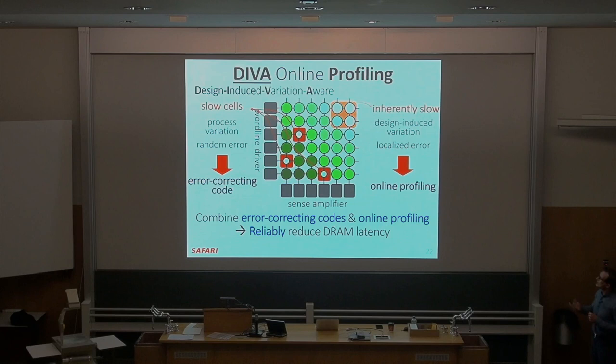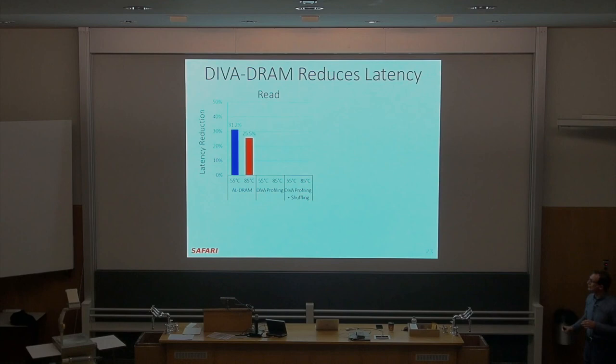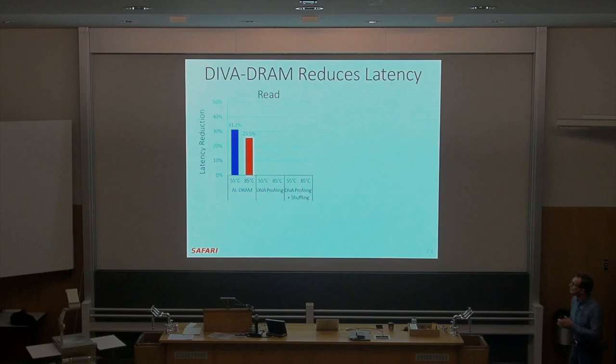Random errors are better handled with error correcting codes, and we reduce the profiling overhead as much as possible. You can exploit the systematic structural variation in memory to do that. These newer chips show that if you actually do DIVA profiling, you get better results — you can reduce latencies even more. Part of it comes from using error correcting codes, and part from being less temperature-dependent.